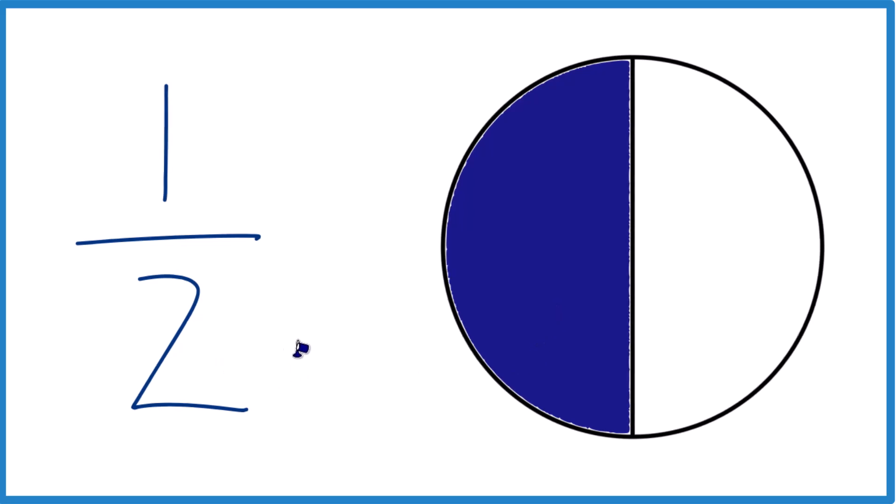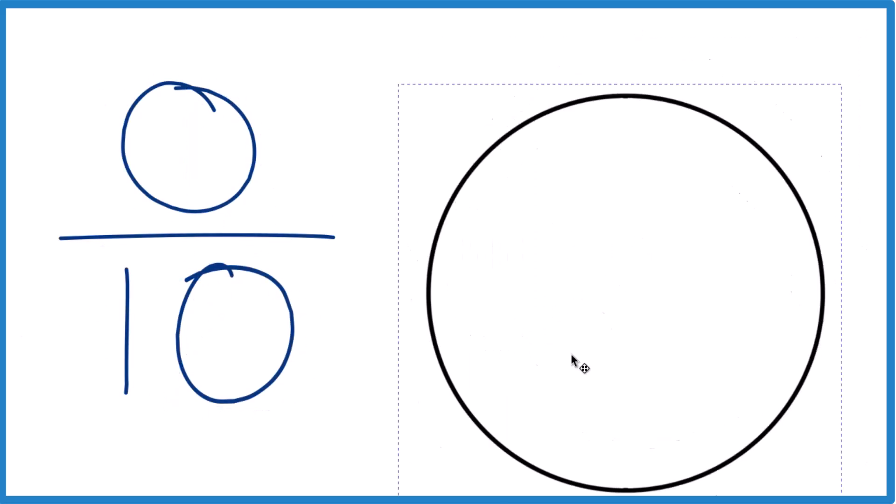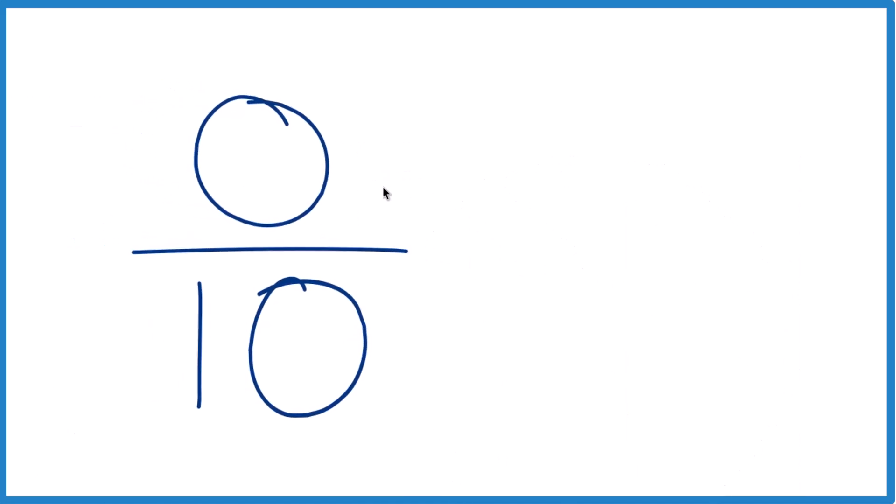But 0 over 10, what does that mean? We have 0 parts divided into 10 pieces. We don't even have this. There's nothing. So nothing divided into 10 pieces, each piece is still going to be nothing. So 0 divided by 10 equals 0.